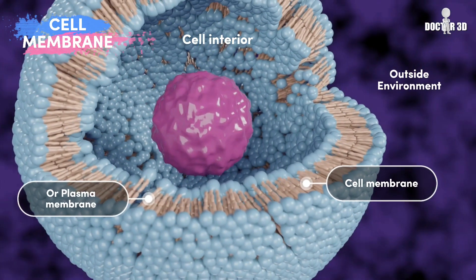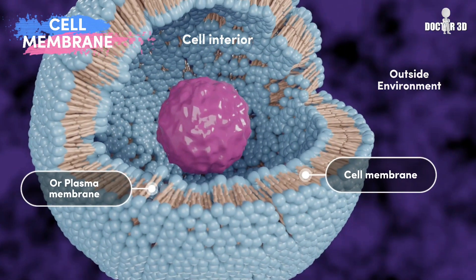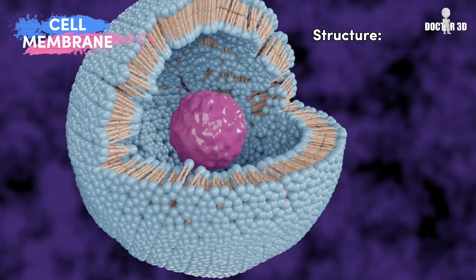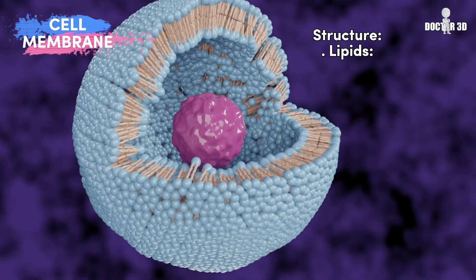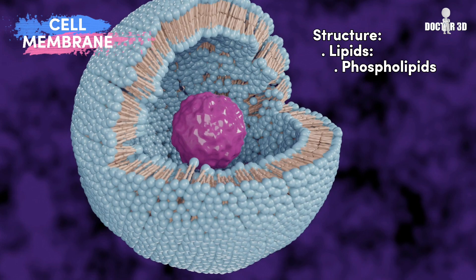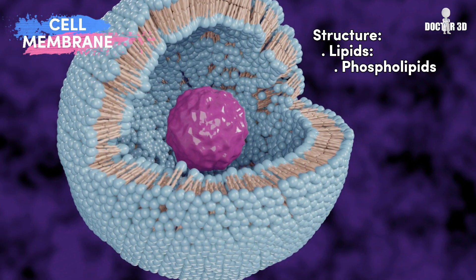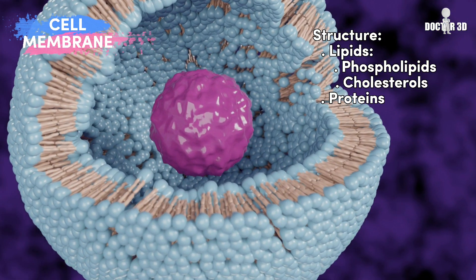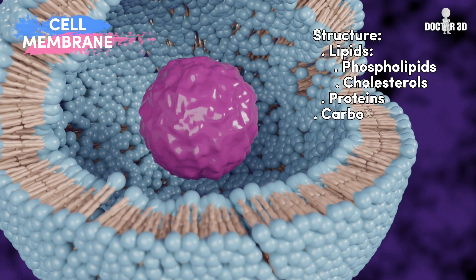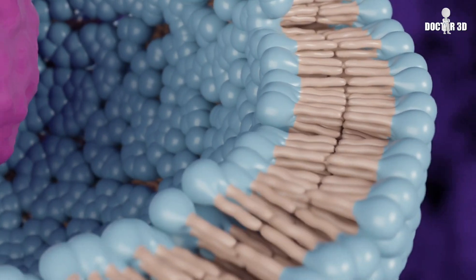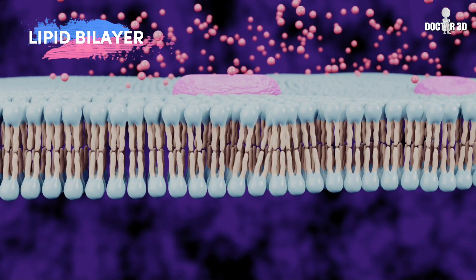The plasma membrane is mainly composed of lipids, which contain phospholipids and cholesterol, proteins, and carbohydrates.